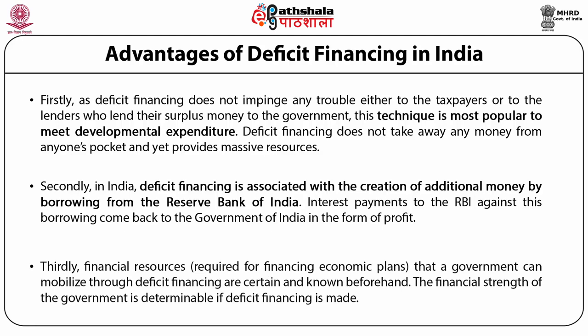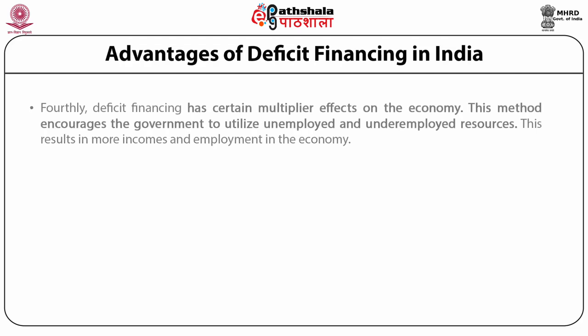Thirdly, financial resources required for financing economic plans that a government can mobilize through deficit financing are certain and known beforehand. The financial strength of the government is determinable if deficit financing is made, and as a result the government finds this measure handy. Deficit financing also has certain multiplier effects on the economy — it encourages the government to utilize unemployed and underemployed resources, resulting in more income and employment.